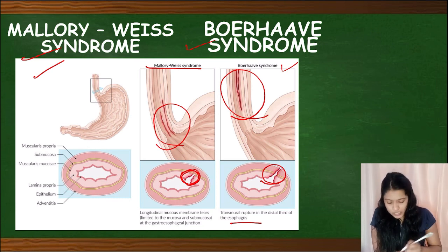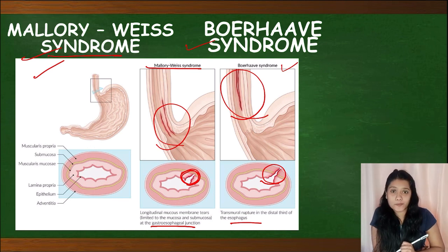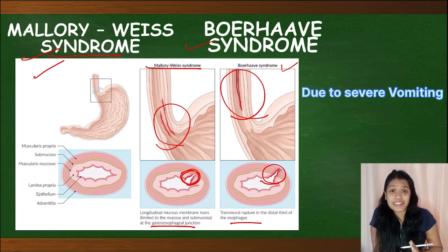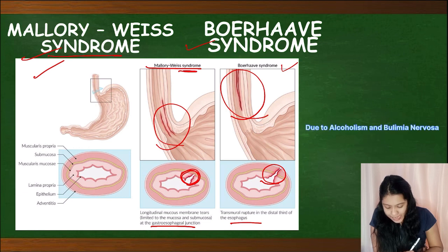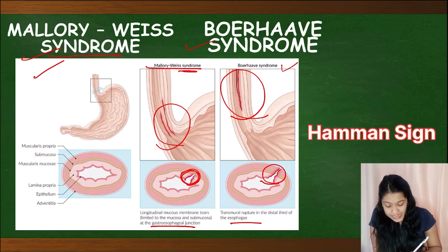Mallory-Weiss syndrome is a longitudinal laceration of the mucosa or submucosa at the gastroesophageal junction, limited to the mucosa and submucosa. The cause is severe vomiting, usually due to alcoholism or bulimia nervosa, and it often presents with hematemesis.